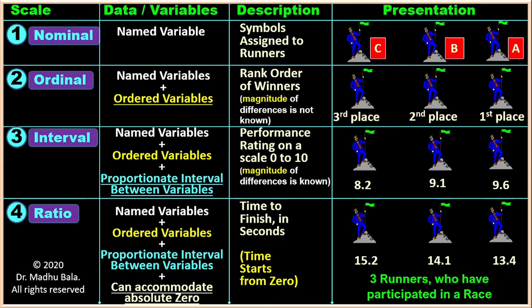Time starts from 0 and runner A has taken the minimum time, achieving first place. B achieved second place and C achieved third place, having taken the maximum time compared to A and B.